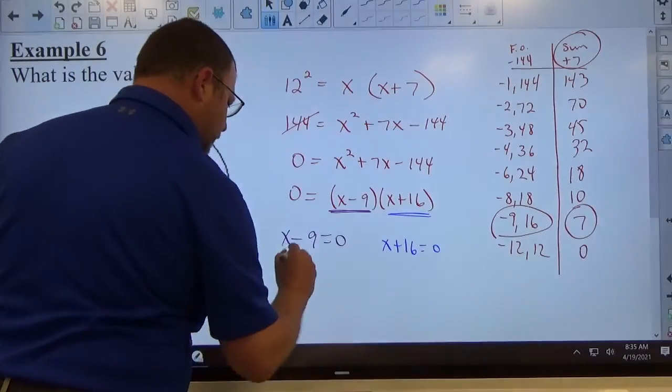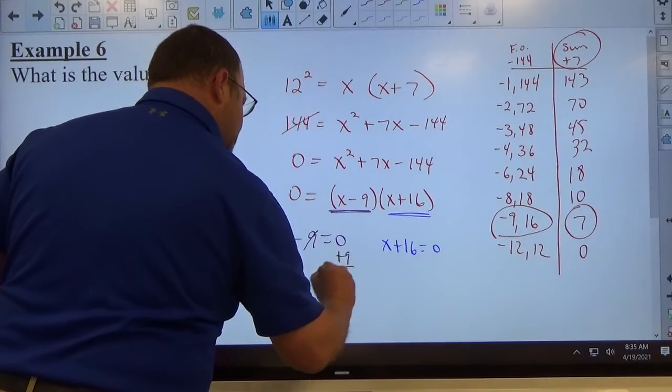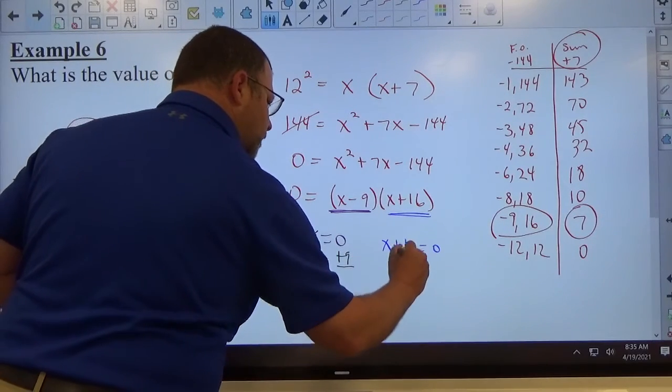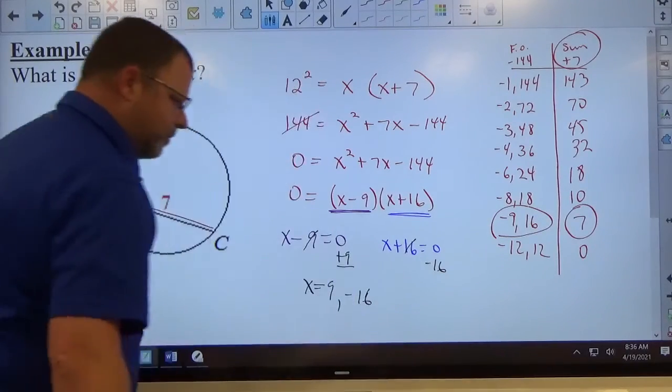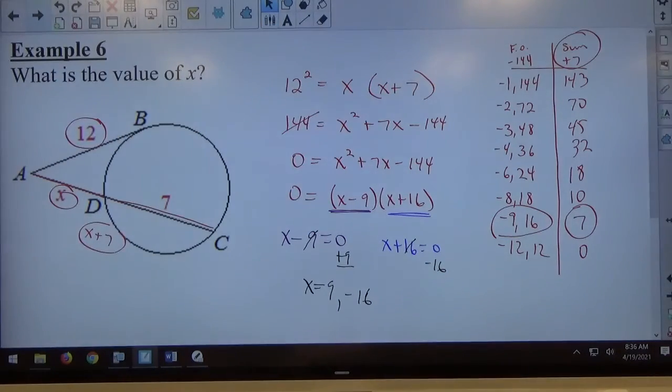If I solve this one I'm going to get plus 9, x equals 9. If I solve this one minus 16, I'm going to get x equals negative 16. Those are my answers for x. X can either equal positive 9 or negative 16. Do both those answers seem reasonable for the problem that we've got here?